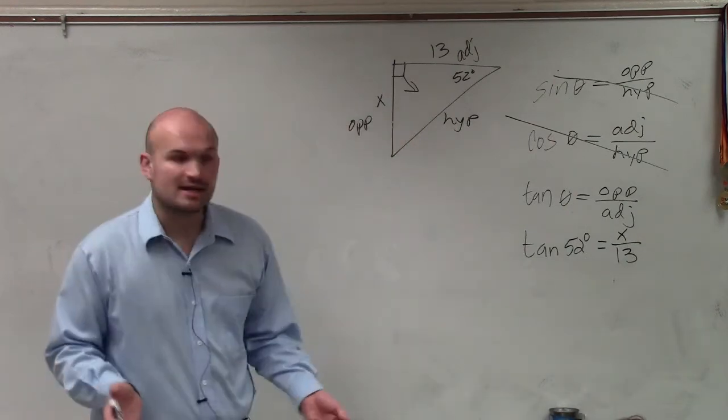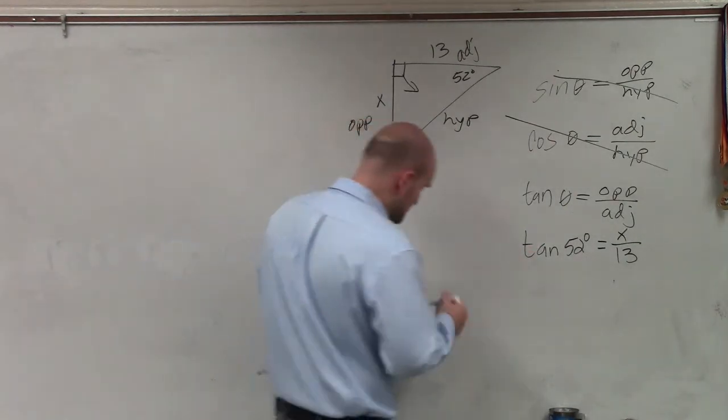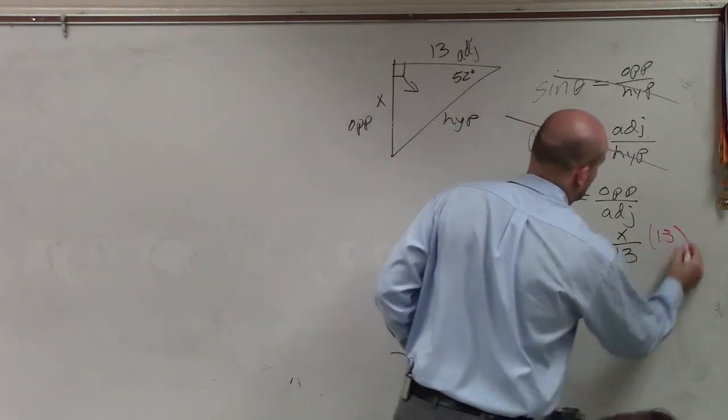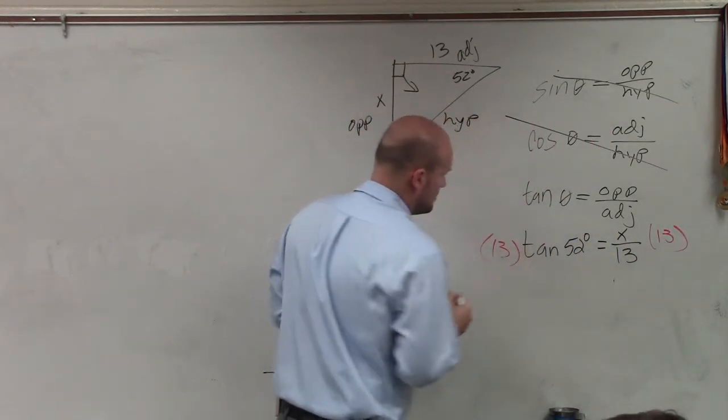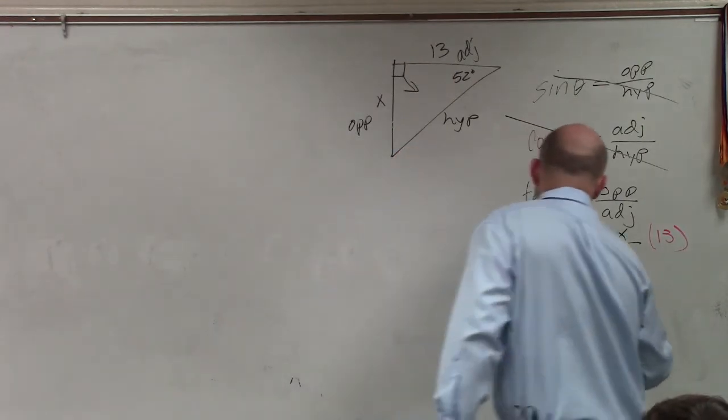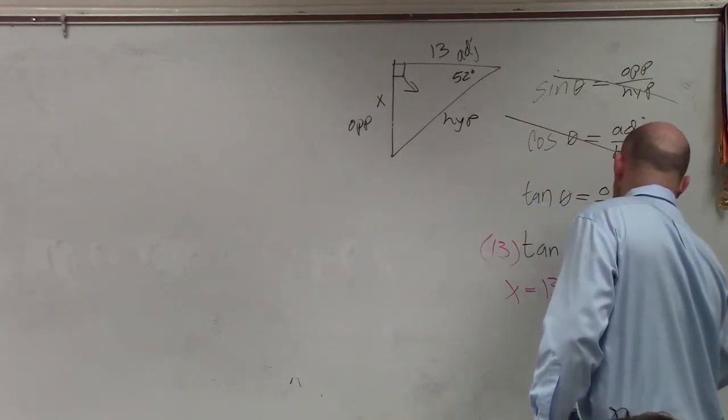Now, I just need to solve for x. So I need to get the 13 off the bottom. So what I'll do is I'll multiply 13 on both sides. And therefore, x equals 13 times the tangent of 52 degrees.